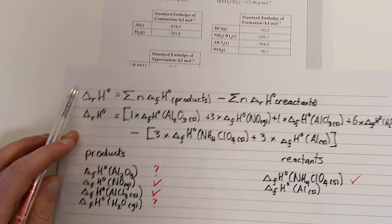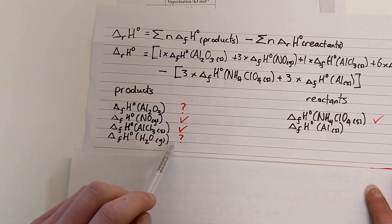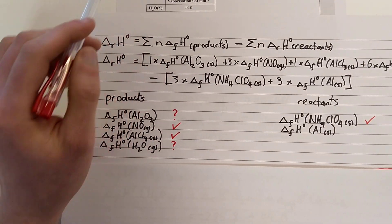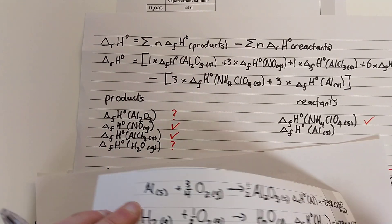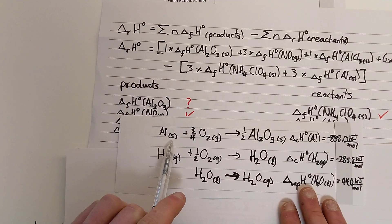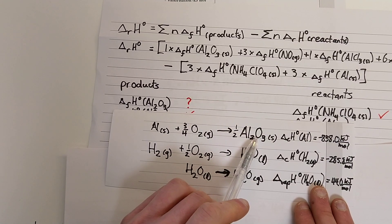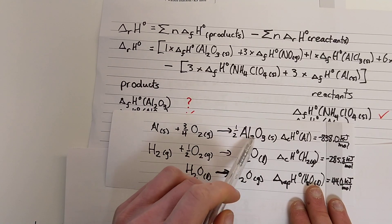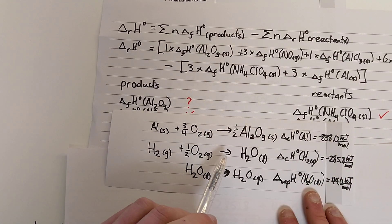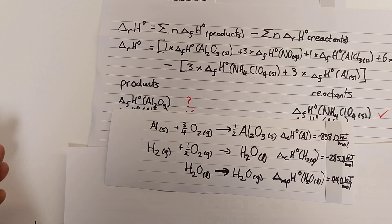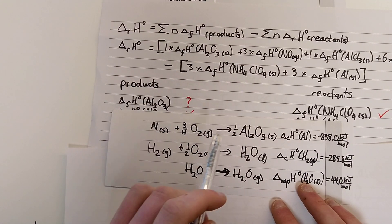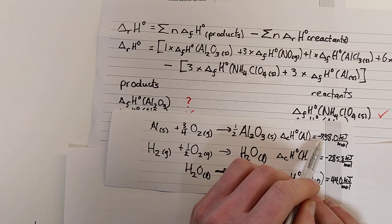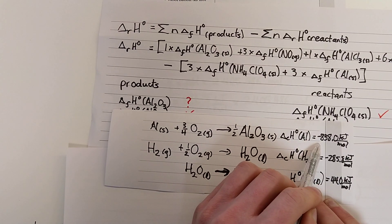To find the standard enthalpies of formation for the two missing products and for aluminium, I'll write out the equation for the enthalpy of combustion of aluminium. When I do that, I see that the combustion of aluminium with oxygen forms aluminium oxide. In other words, the combustion of aluminium looks just like the equation for the formation of aluminium oxide, with one change: the definition of aluminium oxide formation is the formation of one mole of it, but with the combustion equation we're only forming half a mole. So to get the true standard enthalpy of formation of aluminium oxide, we need to double this enthalpy change.